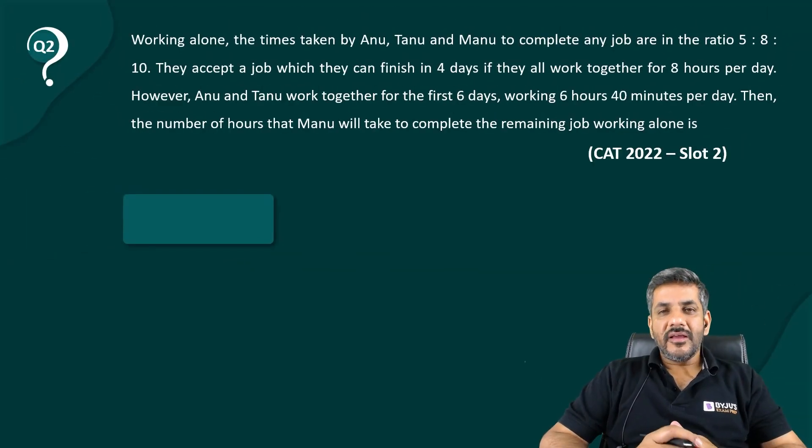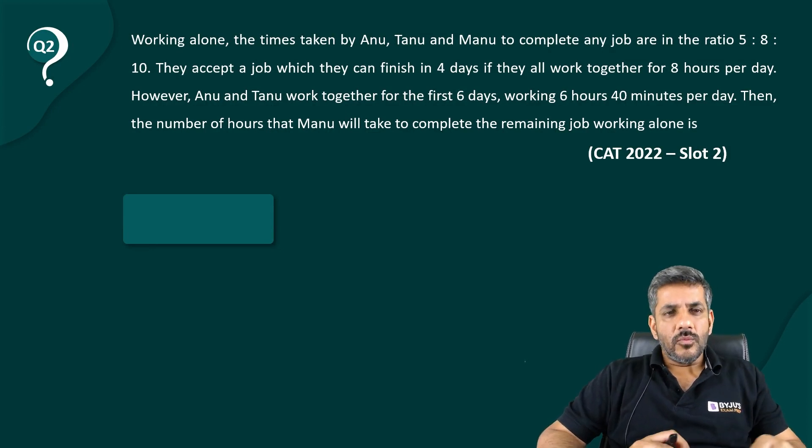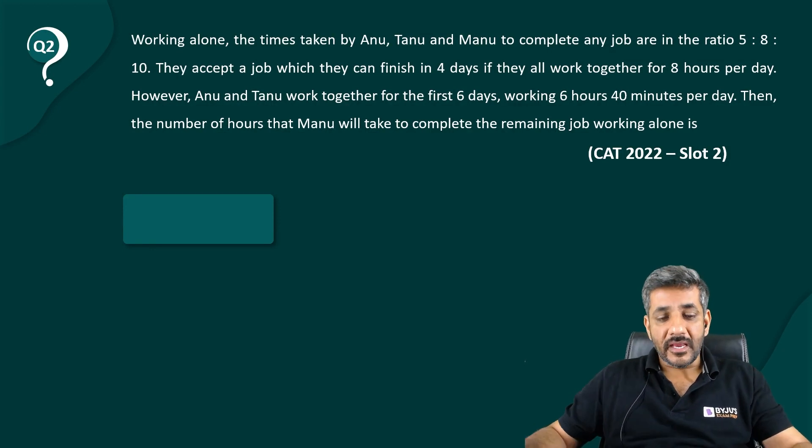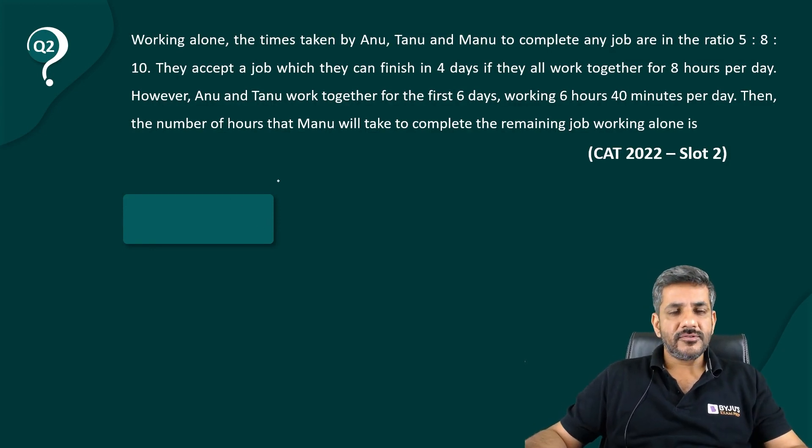Hi, so here we have another question from CAT 2022 slot 2. Working alone, the time taken by Anu, Tanu and Manu to complete any job are in the ratio of 5 is to 8 is to 10. They accept a job which they can finish in 4 days if they all work together for 8 hours a day.